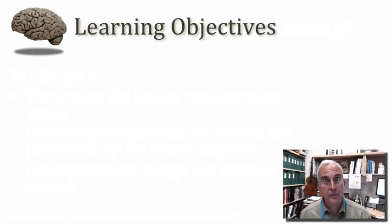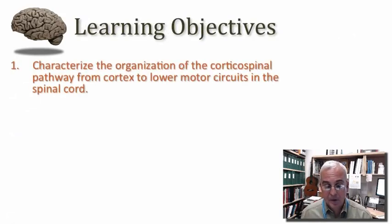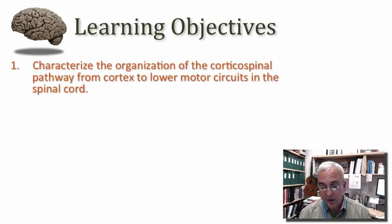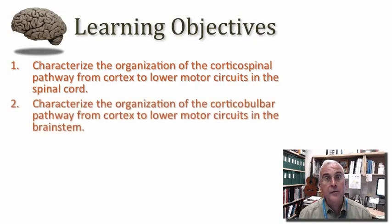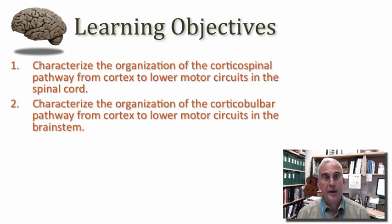I have several objectives for you in this session. I want you to be able to characterize the organization of the corticospinal pathway from the cortex to lower motor circuits in the spinal cord. I also want you to be able to do the same thing for the corticobulbar pathway — as we'll define it, this pathway terminates in the brainstem, not in the spinal cord.